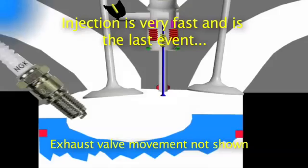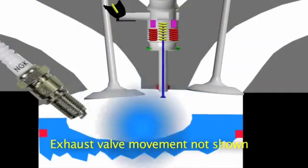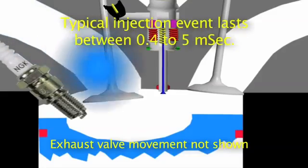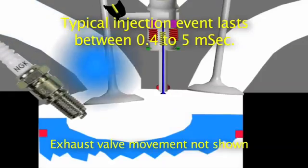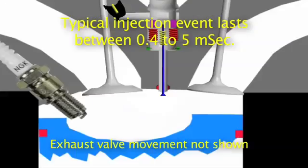The GDI fuel rail is also built sturdier to withstand these pressures and normally has a wall thickness of about one eighth of an inch.